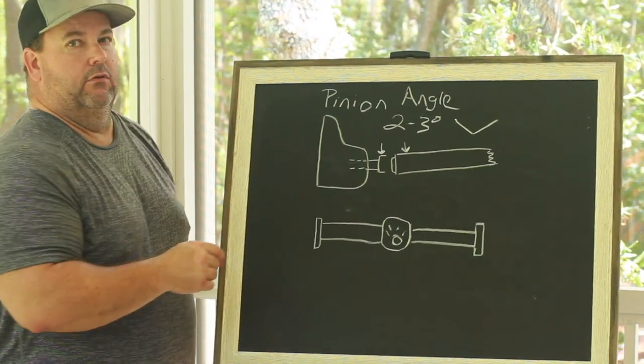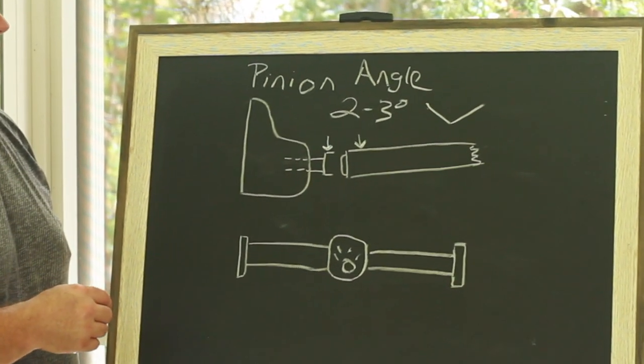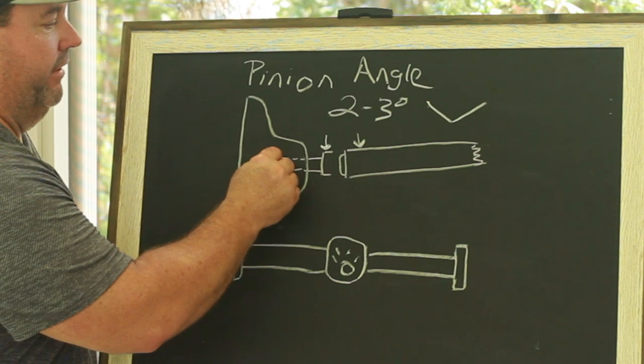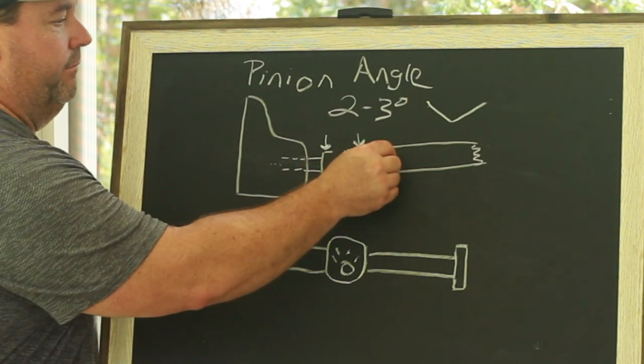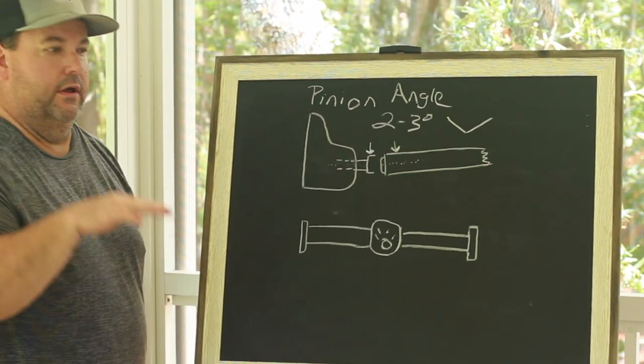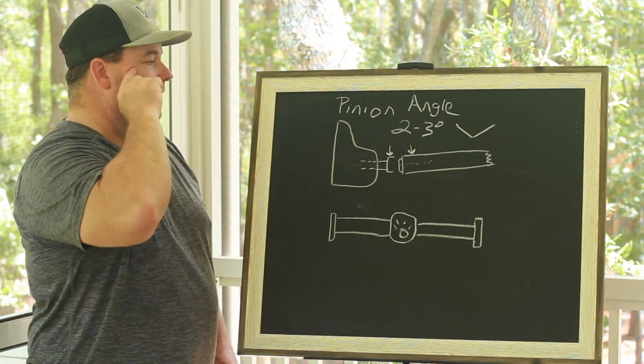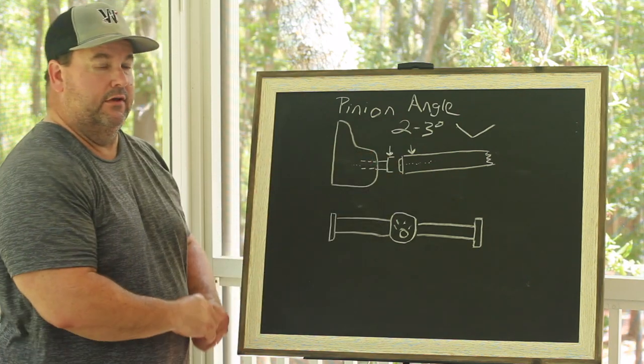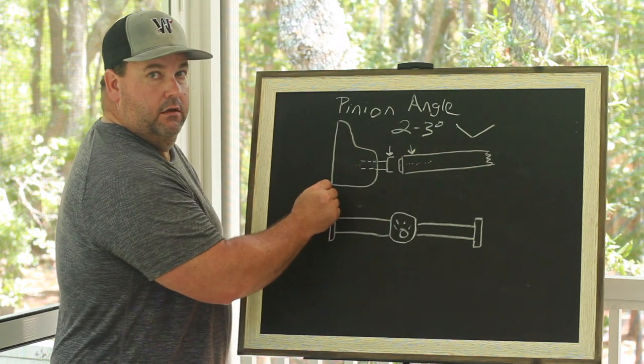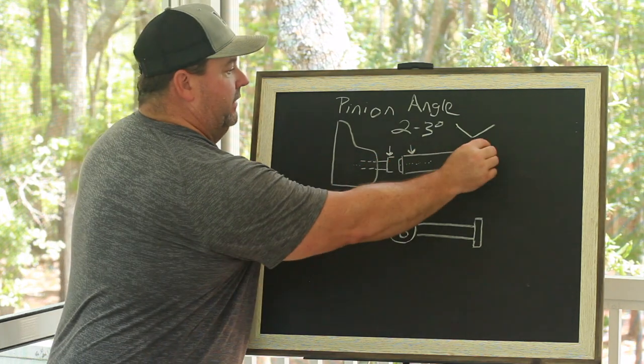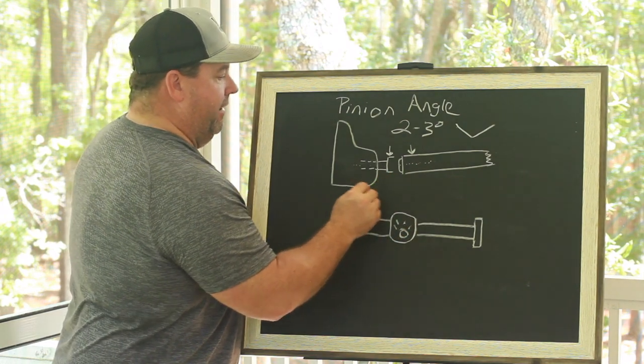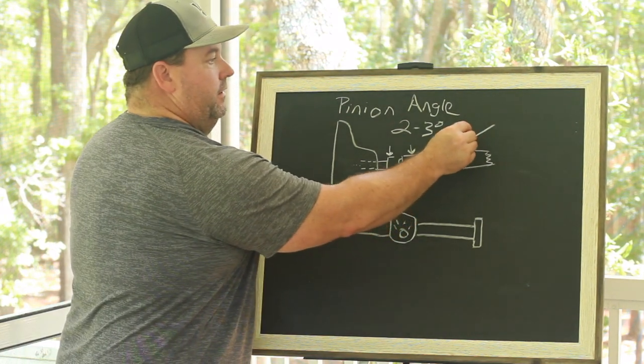Pinion angle and what you're trying to do is you're trying to get this imaginary center line and this imaginary center line, when you're under load and you launch the car and the car is making a pass, I'm trying to get these two center lines in line. I'm trying to make this a contiguous line without a V. So I may have a V, you know, somewhat of a V.